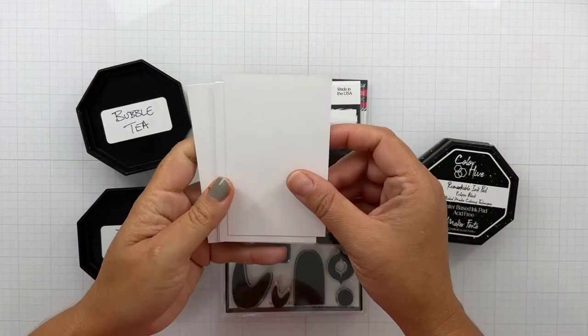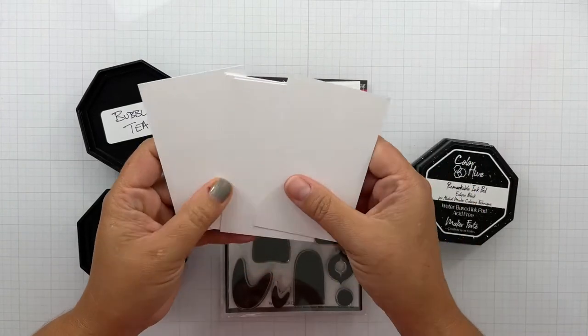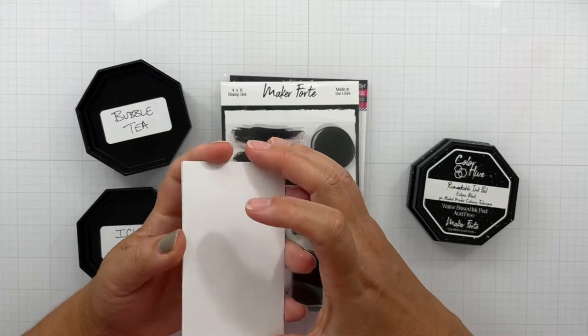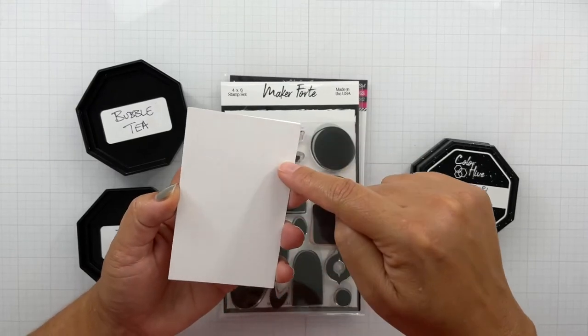So we're going to use some heavyweight white cardstock. This measures two and a half inches wide by four inches long.